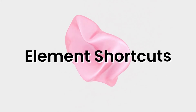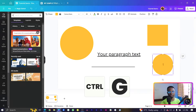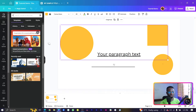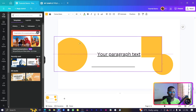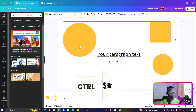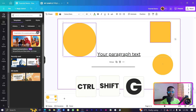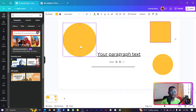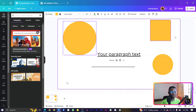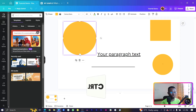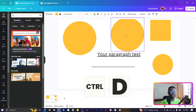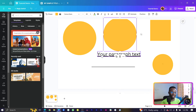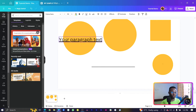Moving on to the element shortcuts. Control-G groups elements, and Control-Shift-G ungroups them. If you want to duplicate any element, Control-D duplicates it for you. These are some of the most essential element shortcuts to get used to.